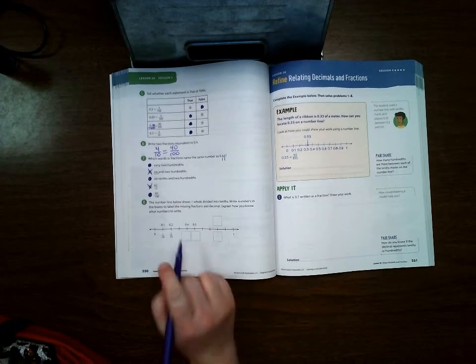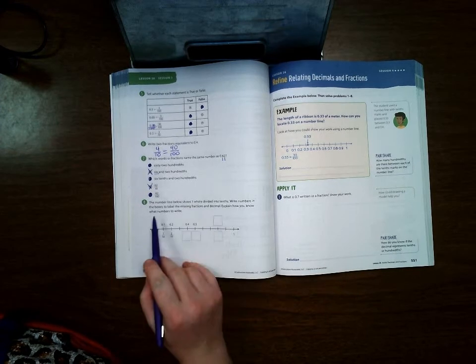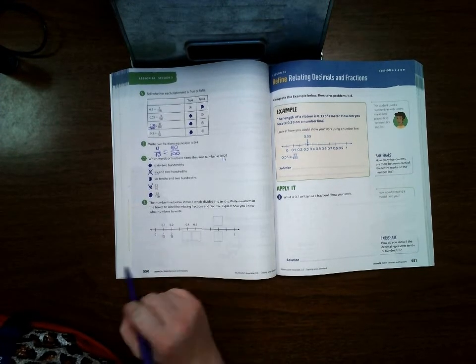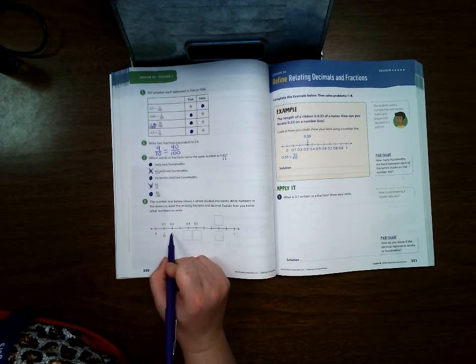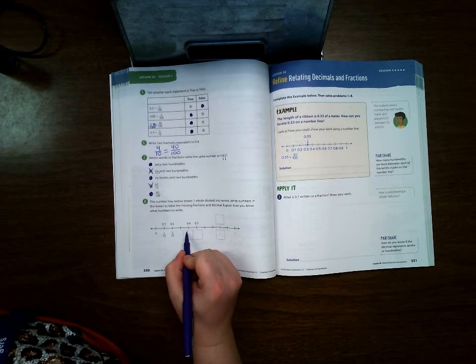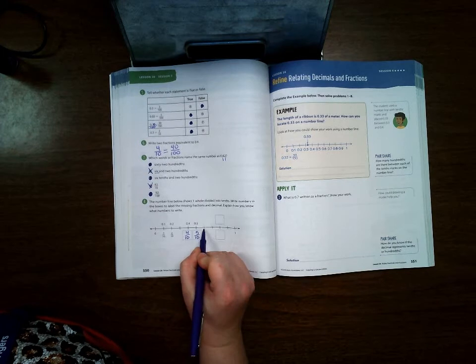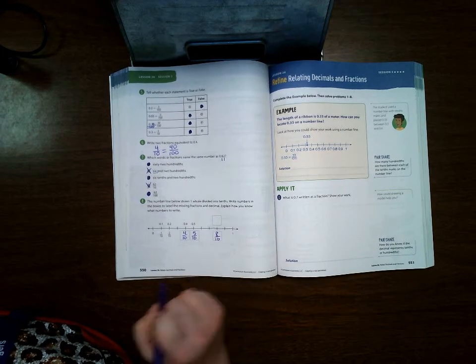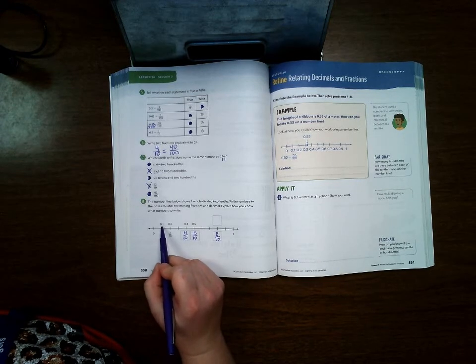The number line below shows one whole divided into tenths. Write the numbers in the boxes to label the missing fractions and decimals. So down here we're labeling it just like a fraction: 1/10, 2/10, 3/10, 4/10, 5/10, 6/10, 7/10, 8/10. And up here you can see 1/10 is the same as 0.1, so 8/10 would be the same as 0.8.